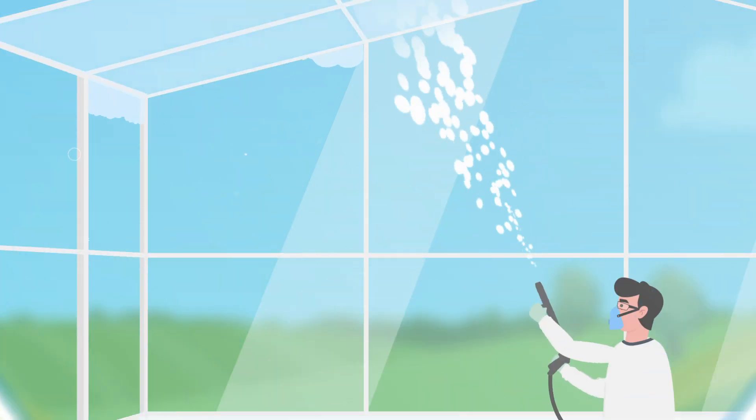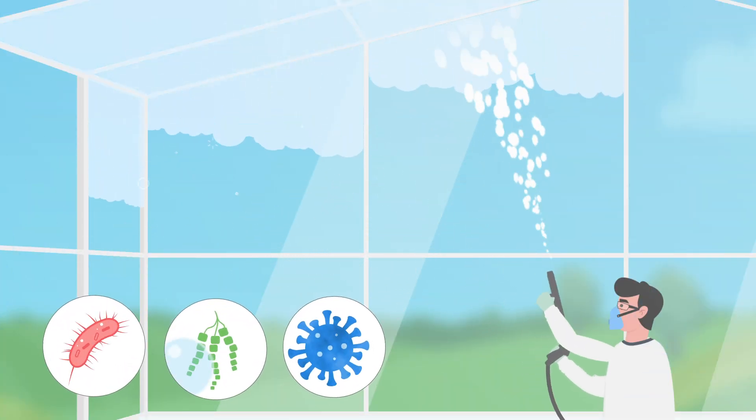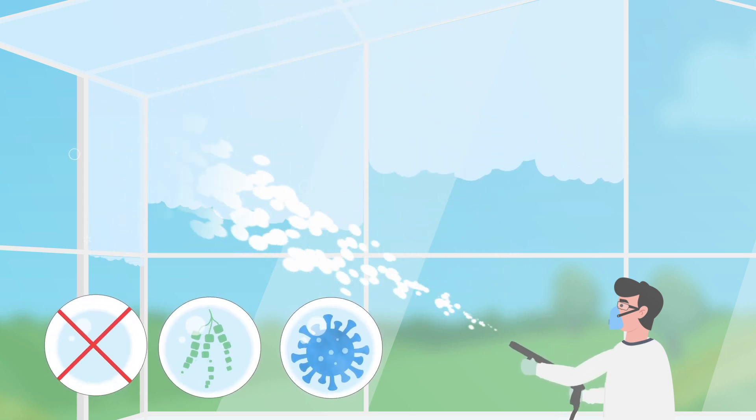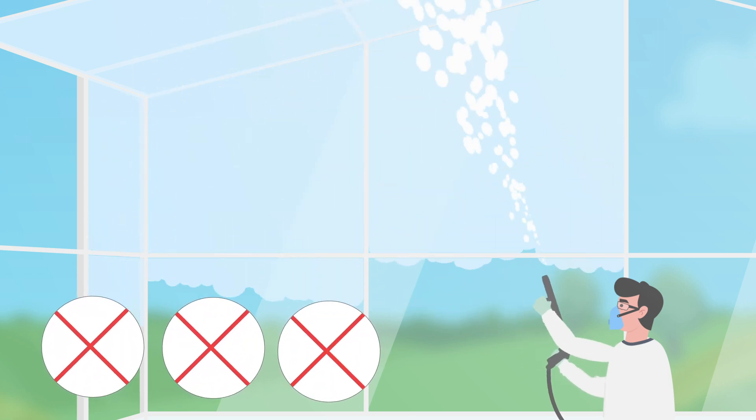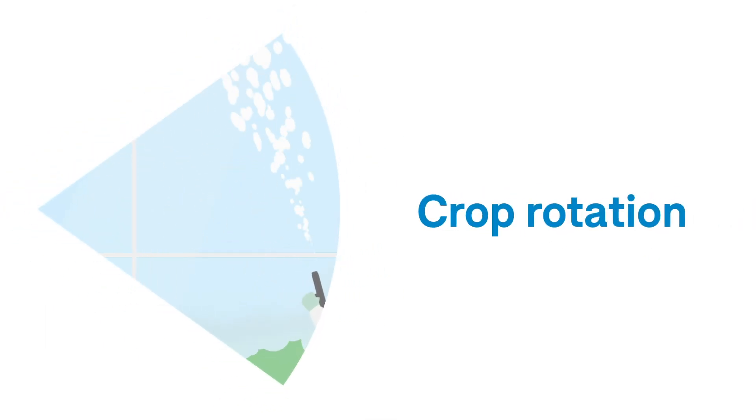A crop rotation is an important moment to make a clean new start. Therefore, now is the time to fully clean and disinfect the greenhouse. Use a powerful disinfectant to kill bacteria, fungi and viruses.